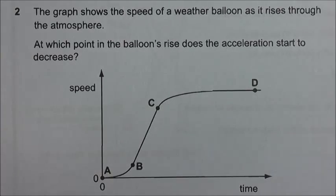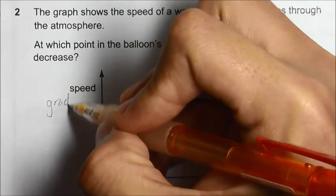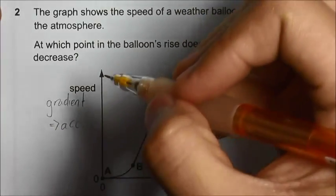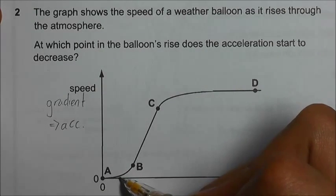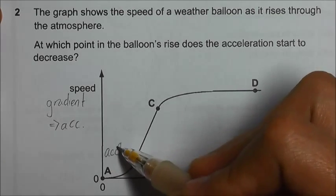We have a speed time graph in question 2. So we need to know that the gradient of a speed time graph gives us the acceleration. Starting from point A, the gradient increases because it's getting steeper and steeper. So the acceleration increases.